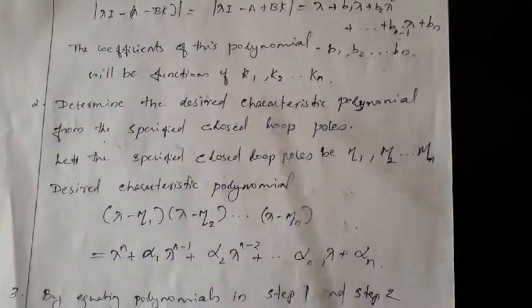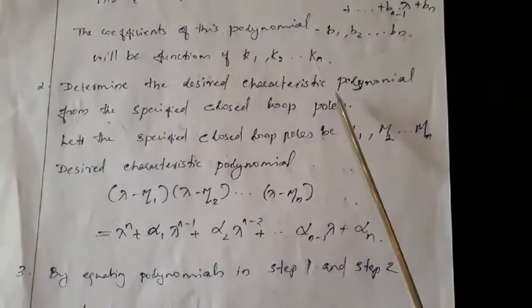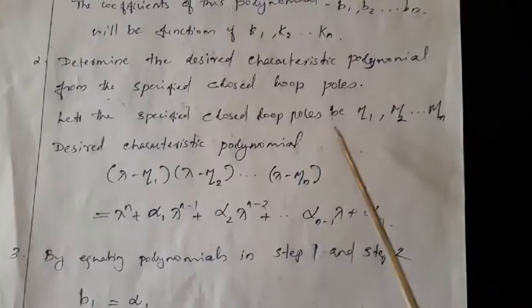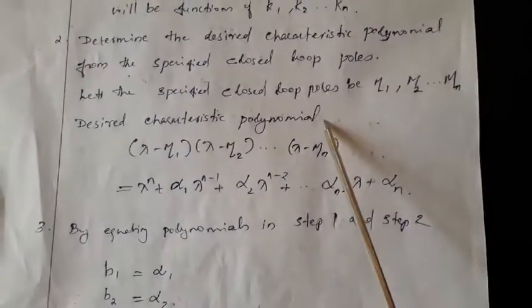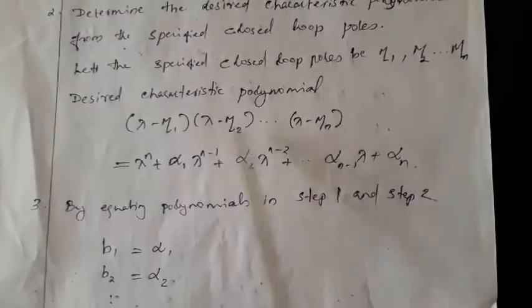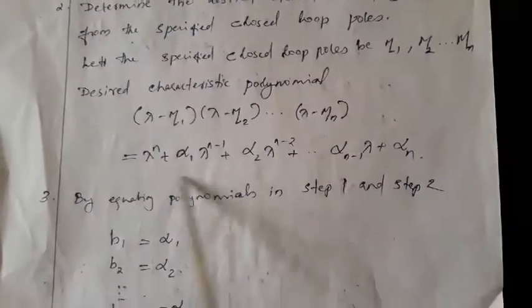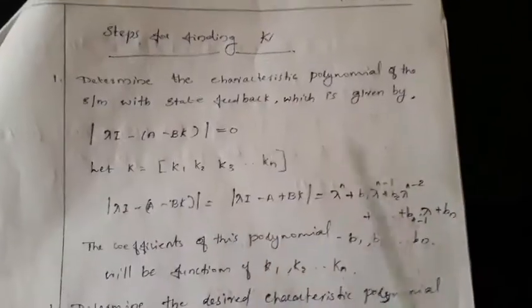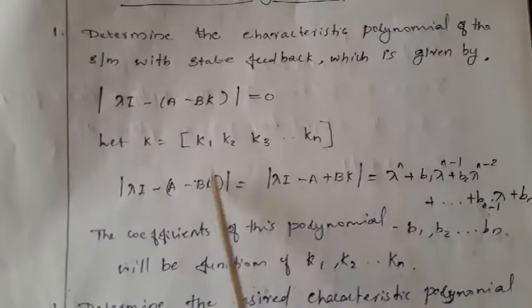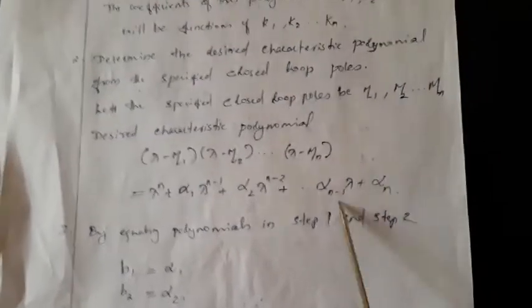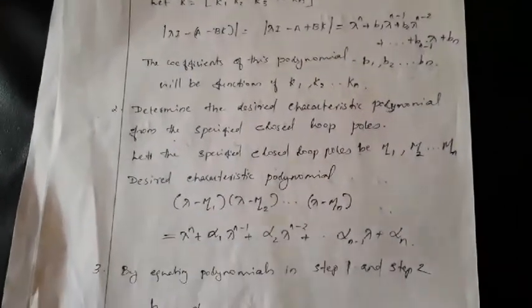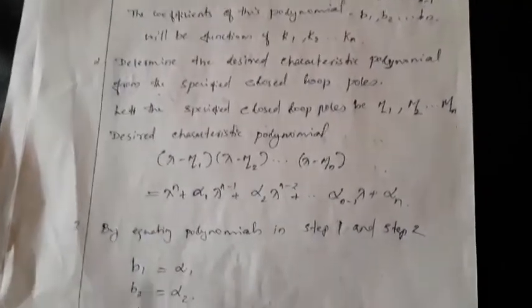The second step is to determine the desired characteristic polynomial using the specified closed-loop poles. Let the specified closed-loop poles be μ1, μ2, ..., μn. Then the desired characteristic polynomial is (λ - μ1)(λ - μ2)···(λ - μn) = 0, giving another equation with coefficients α1, α2, etc. These two equations must be equal, so we equate corresponding coefficients: b1 = α1, b2 = α2, etc. By solving these equations, we get the value of K.